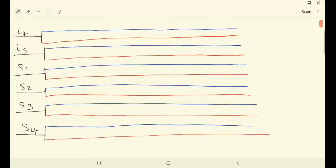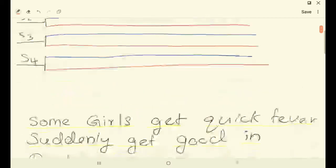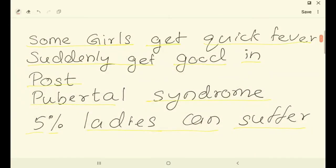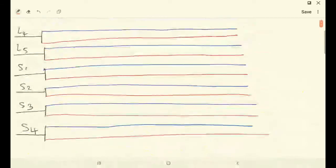Today we are going to draw the sacral plexus using our mnemonic. In the previous video I explained this mnemonic: some girls get quick fever, suddenly get good in post-pubertal syndrome, 5% ladies can suffer.